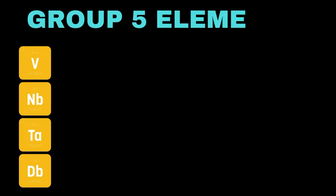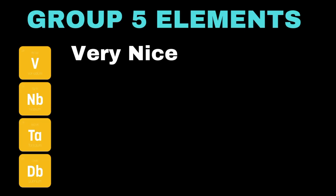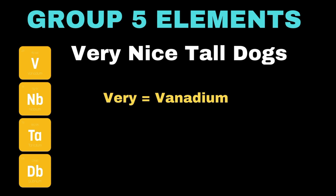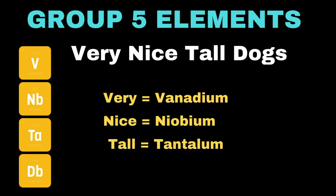Moving towards group 5 elements, its mnemonic is: 'Very nice tall dogs.' Here 'very' represents vanadium, 'nice' denotes niobium, 'tall' refers to tantalum, and 'dogs' represents dubnium.